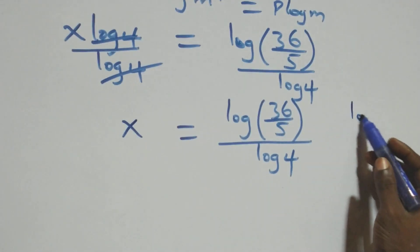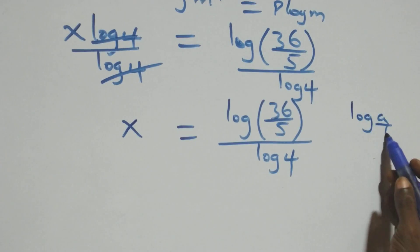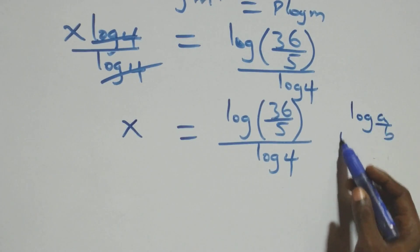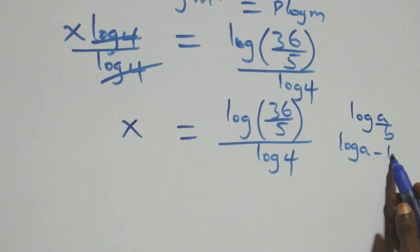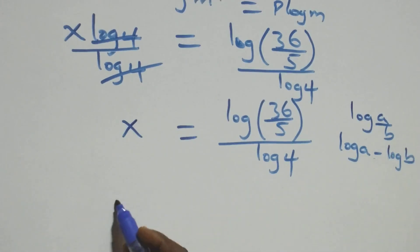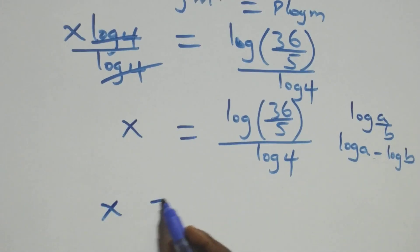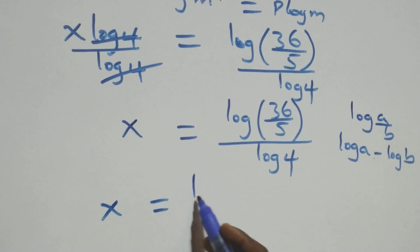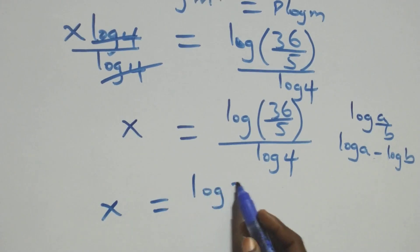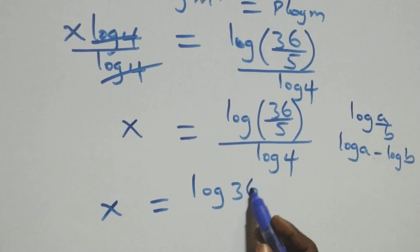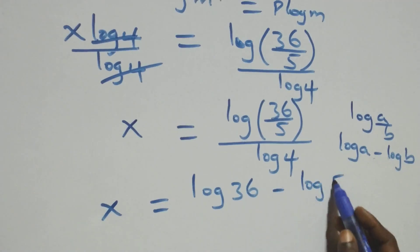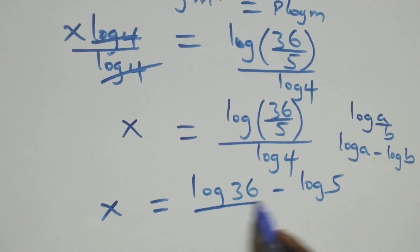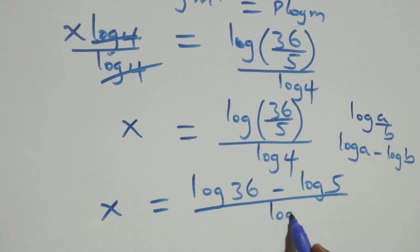This follows from the log rule: when we have log(a over b), this is the same thing as log a minus log b. So we have x equals log 36 over log 4, minus log 5 over log 4.